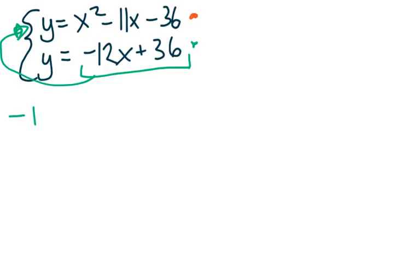we get negative 12x plus 36 equals x squared minus 11x minus 36. Now, the only variable that we have in here is x, and we can solve for x. So let's simplify this out.